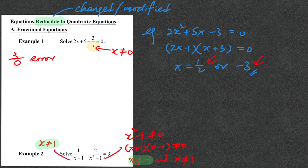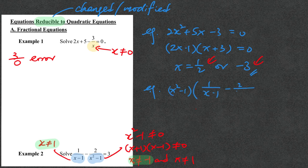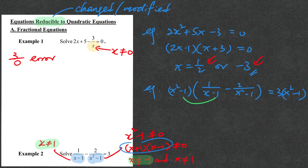Generally speaking, in solving an equation, our aim is to remove the fraction first, then try to make it a quadratic equation. So in example 2, our first job is to multiply x squared minus 1 on both sides. Please note that because of the identity, x squared minus 1 equals (x plus 1)(x minus 1). So when you simplify x squared minus 1 over x minus 1, it simplifies to x plus 1. The second term is easier — the denominator is cancelled out with x squared minus 1, giving you minus 2.